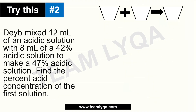Doon na tayo sa pangalawa — si Dave naman. Hi Dave, and if you want me to use your name next time, comment nyo lang yung pangalan ninyo o ng loved one nyo sa baba para maigrant natin sila ng shoutout. Sabi, Dave mixed 12 ml of an acrylic solution with 8 ml of a 42% acrylic solution. At ang kinalabasan niya ay 47% acrylic solution. Find the percent acid concentration of the first solution. So nawawala yung kapares ng 12 ml — this will be x. And alam nyo sa totoo lang, very therapeutic yung ganitong klaseng tanong kapag alam mo na yung ginagawa mo, kasi it's all about filling in yung information and solving it.